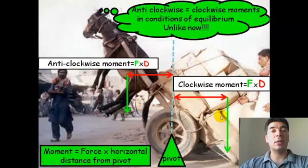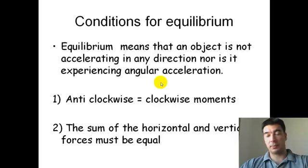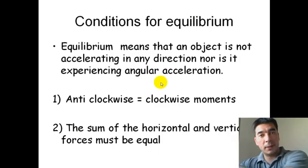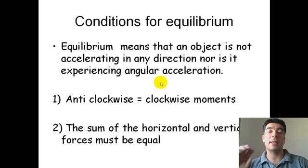So let's go on and look at the conditions of equilibrium. What does equilibrium mean for a start? Equilibrium means that an object is not accelerating in any direction. It could be moving along at a constant speed, but it's not getting faster and faster and faster. So it's not accelerating up, down, left or right. It could be moving up and down or left and right, but not getting faster and faster.